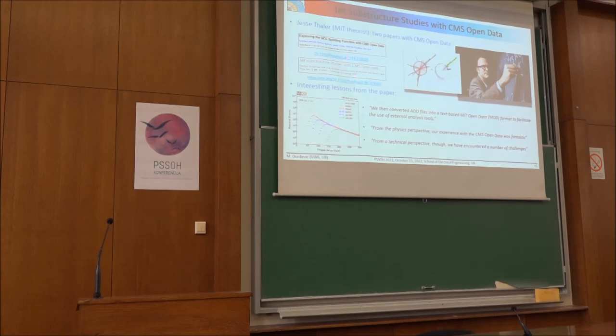So he published a work on QCD distributing functions using the open data. Here is the image from his second paper on the substructure of jets that are reconstructed in CMS. And this is a typical plot that we also produce in CMS there. So it is a fully, let's say, contained paper, providing some further insights from theorists about using the original experimental data.